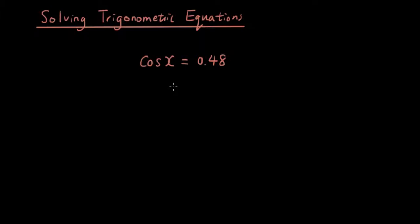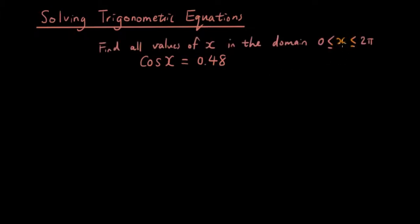Now the first thing you want to do is define what the domain for x equals. So let's say the domain of x is between 0 and 2π — or you can say 0 and 360 degrees. But if the question specifies the angle in terms of pi, then you automatically know it has to be done in radians. So just make sure you set your calculator on radians before you do this.